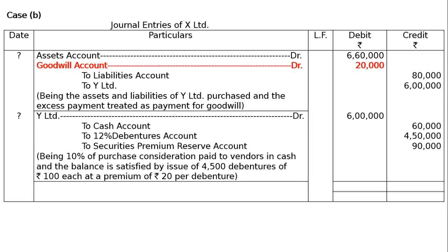And Rs. 20 premium — that is 4,500 into 20 — to securities premium reserve account, that is Rs. 90,000. Being 10% of the purchase consideration paid to vendors in cash, and the balance satisfied by issue of 4,500 debentures of Rs. 100 each at a premium of Rs. 20 per debenture. Then the journal is to be totaled and the totaling will be Rs. 12,80,000 for both debit and credit columns. This is the final answer.